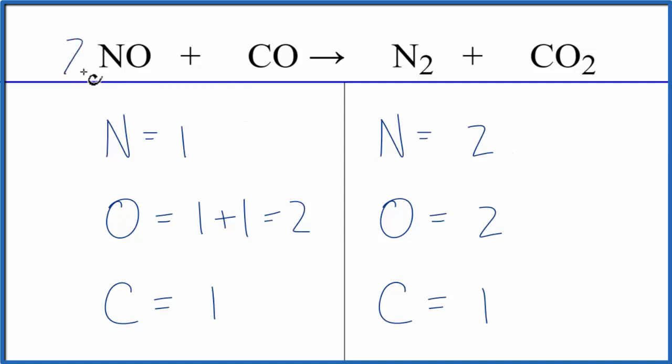and we're going to have to put a coefficient of 2 in front of the NO. So 1 times 2, that would balance the nitrogens. And next, let's update our oxygens. So we have the one oxygen times the two, that's two, plus we have this one oxygen here. So we have three oxygens now.